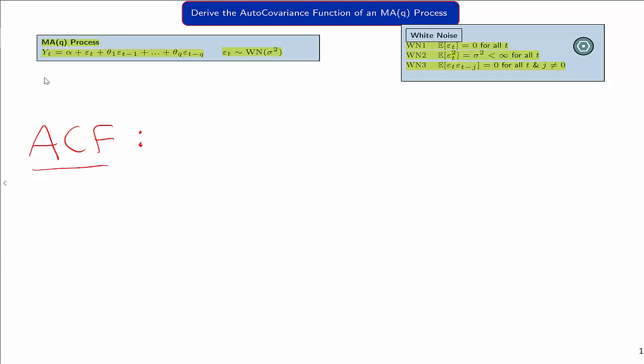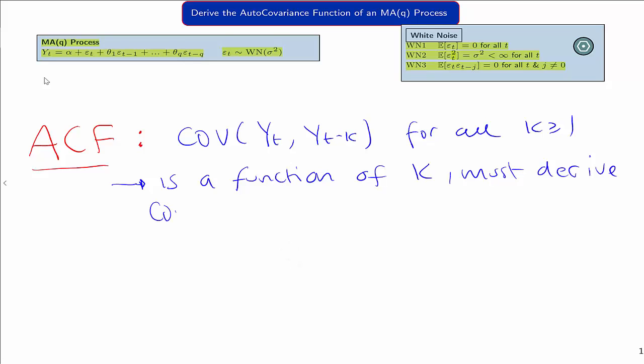So what is the autocovariance function? It's the covariance of yt and yt-k, k periods back, for all periods in the past, k equals 1 back forever. So we need to derive the covariance yt and yt minus 1, yt and yt minus 2, and so on. Notice that it's a function of k. We have to derive the covariance of all lags in the past, not just one or two lags, but all of them. In most cases, the covariance takes a relatively simple form.